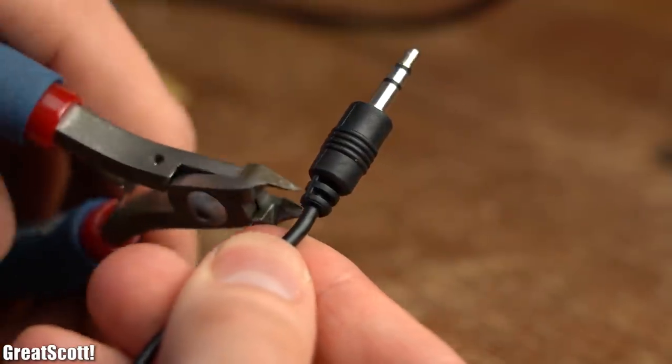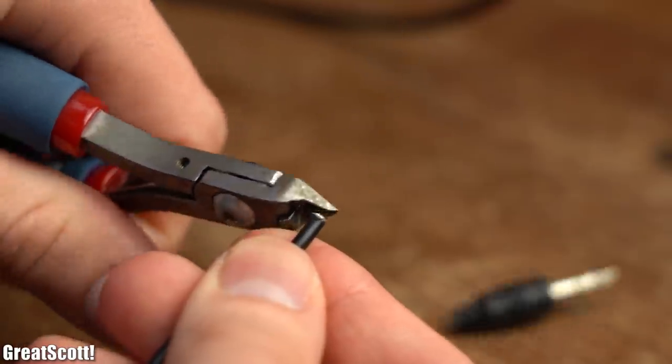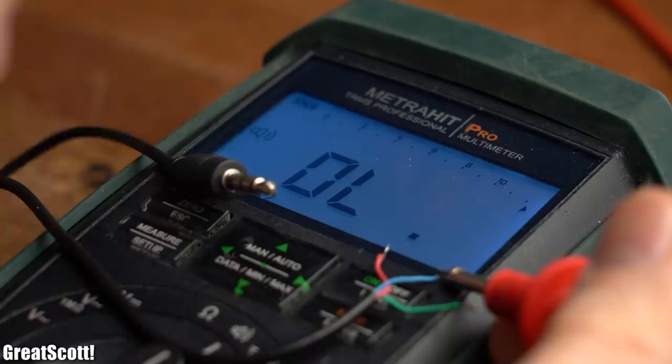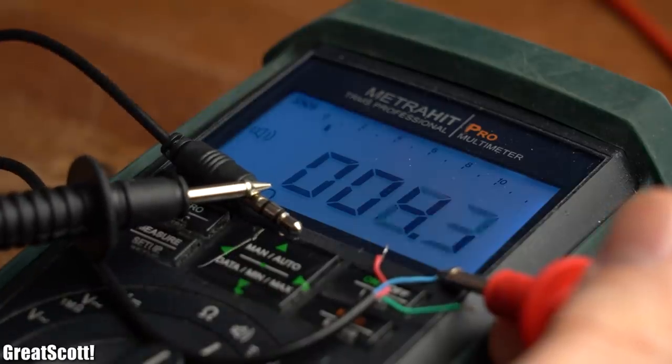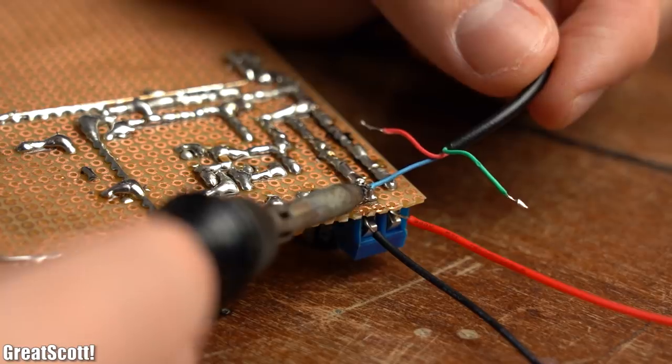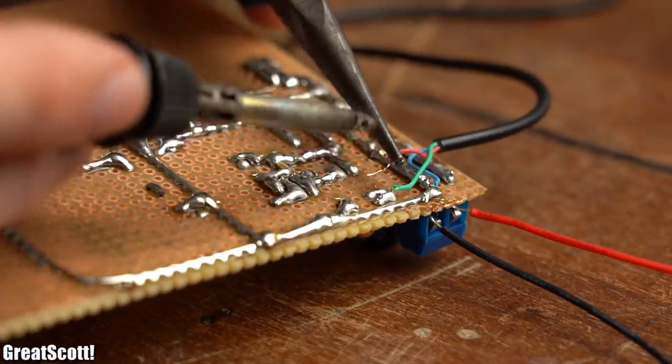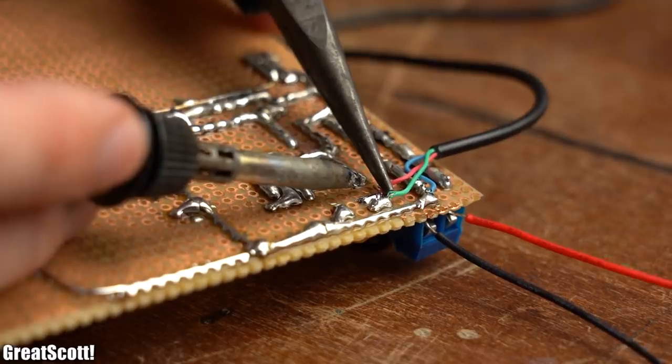As a first test, I cut up a 3.5mm audio cable in order to expose its 3 wires. After determining that the blue wire was ground, I soldered it to the ground of the amplifier board, and afterwards I soldered the left and right channel to the amp inputs.